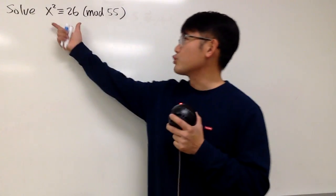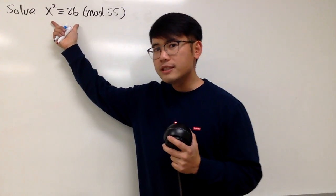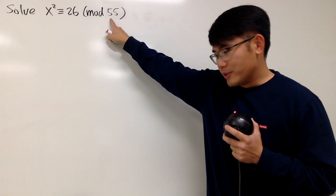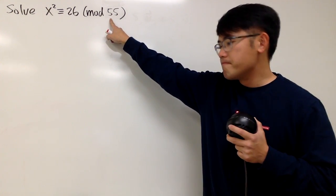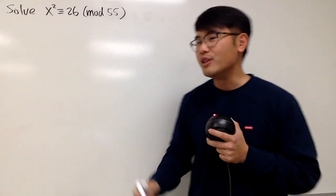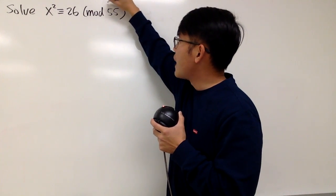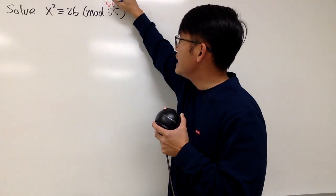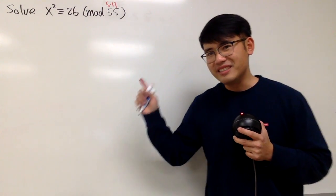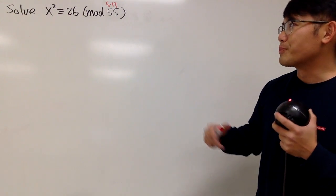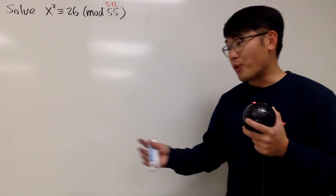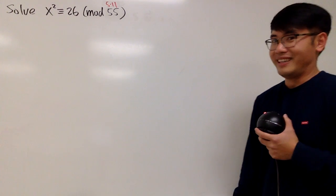Let's do some math for fun. We'll solve this quadratic congruence, but the modulus here is not a prime number. It's okay though, we can still solve it because we know 55 is just 5 times 11 — only a product of 2 prime numbers. This is not that bad at all. If you have a product of 3 or 4 prime numbers, please just use a computer.